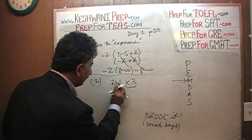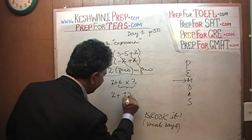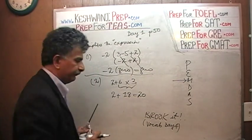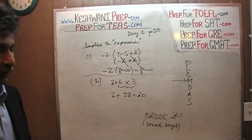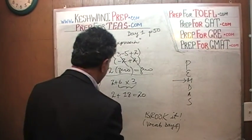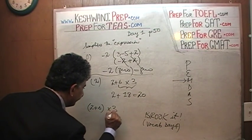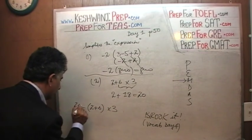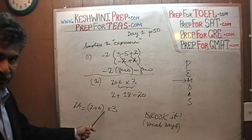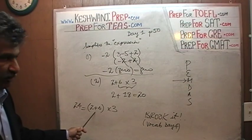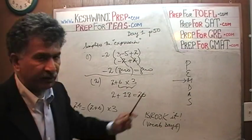So we get 2 plus 6 times 3, which is 18, and the answer is 20. 24 would have been the wrong answer. 24 would have been the correct answer if we were given something like this, with parentheses around 2 and 6. In this case, the answer would be 24 because since we have parentheses around 2 and 6, that addition has to be done first because the parentheses is first. Here, since there are no parentheses, we have to do the multiplication first.